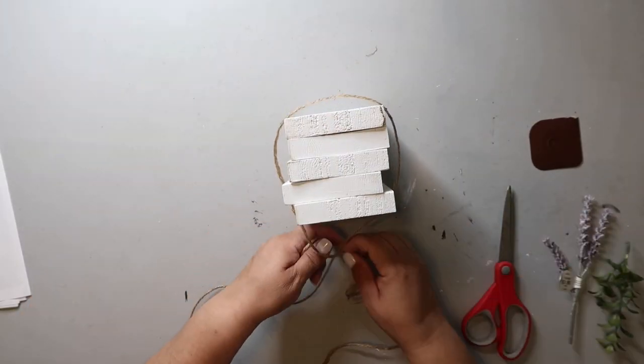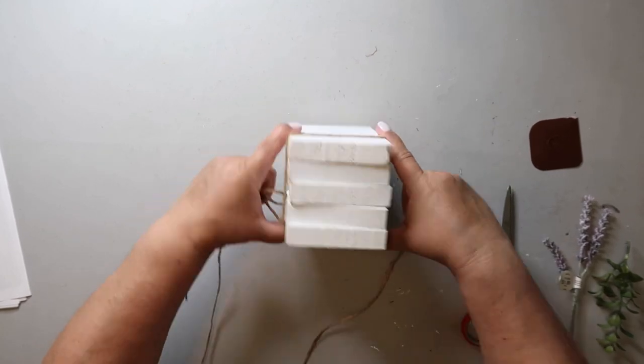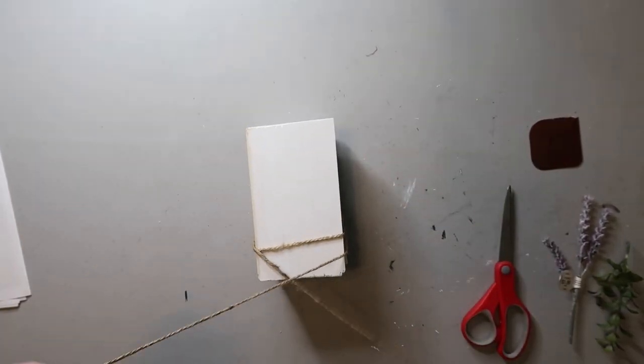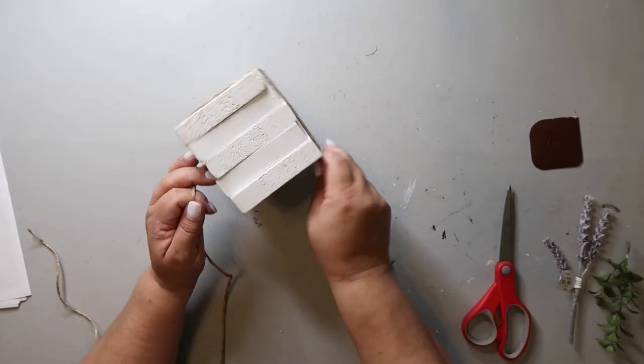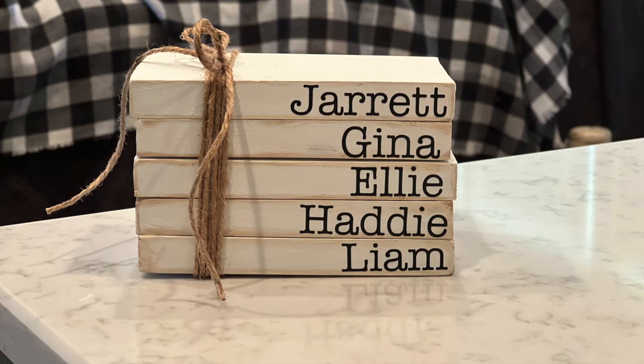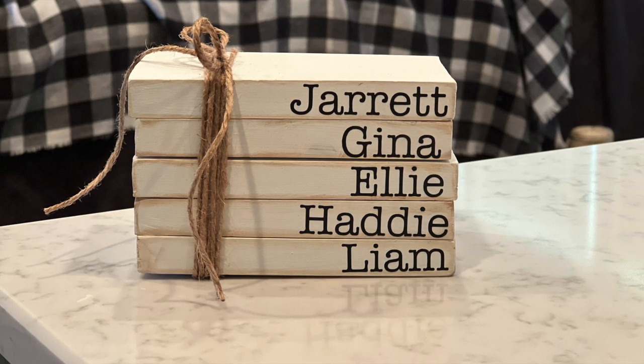To finish this off you just wrap some twine around the blocks. I did use my lighter to burn off the little wispy strings from the twine to give it a bit of a cleaner look. This is how it turned out. Super cute! I absolutely love it. I hope my sister likes it too.